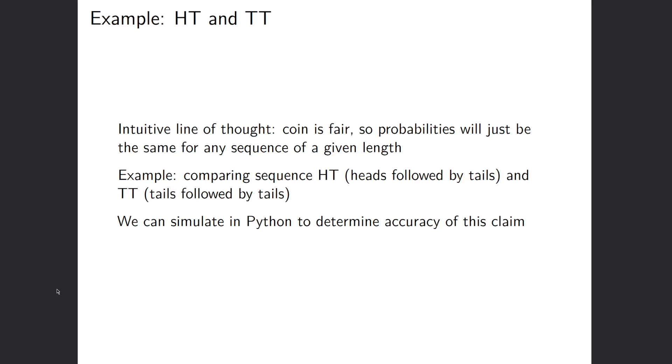So intuitively, the coin is fair, so maybe the probabilities will just be the same for all the sequences of that given length, right? So for heads, tails, and tails, tails, maybe those will be the same expected number of steps before we see them because heads into tails, that's 25% probability, right? And then tails and tails, that's also 25% probability. So you'd think maybe we expect to see them after the same number of coin flips.